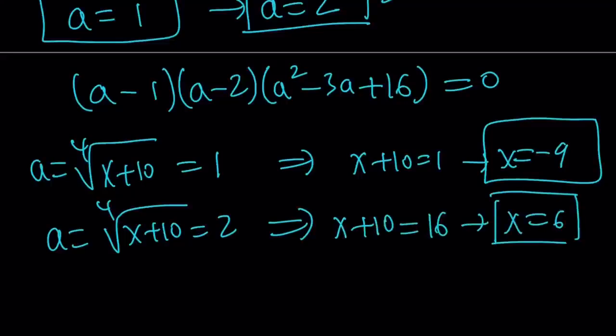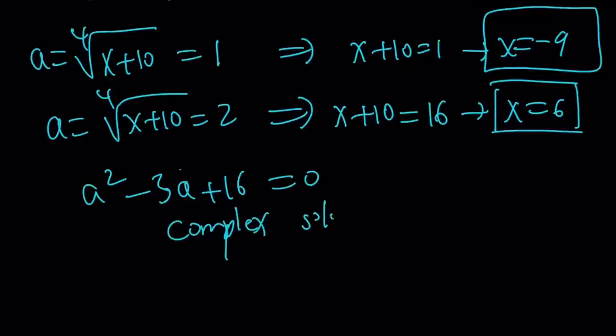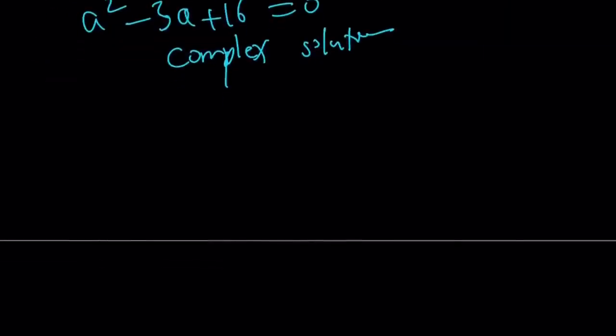So, those are the two real solutions because the others, this a squared minus 3a plus 16 equals 0 gives you complex solutions. Definitely, you can go use them. But, we're looking for real solutions for whatever reason. Anyways, so, we got the x values. We're good. Let me go ahead and show you the second approach real quick.